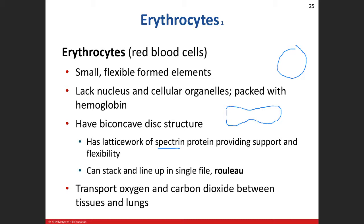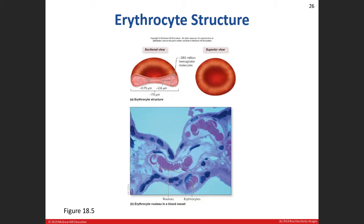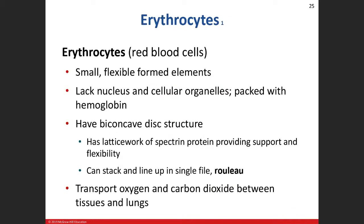When red blood cells can't fit into small spaces, they get damaged quickly. When they line up in your blood like a stack of quarters or pennies, that's called a rouleau configuration. You can see in microscopy all these red blood cells stacked on top of one another as they flow through the bloodstream — mainly through capillaries, which can only accommodate one red blood cell at a time.